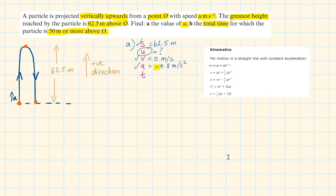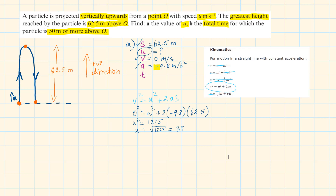We need a formula without T containing all other SUVAT letters. Using V squared equals U squared plus 2AS and replacing the values, rearranging gives U squared equals 1225. Square rooting this, U equals 35 metres per second.